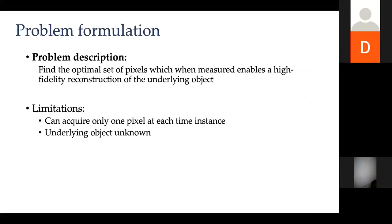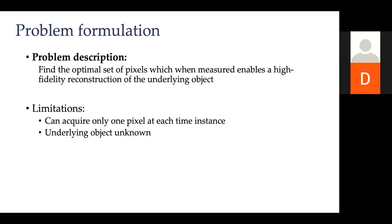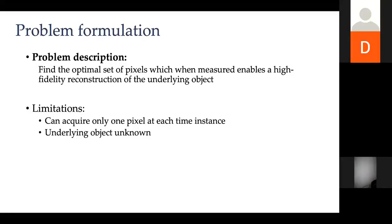The problem formulation is: find the optimal set of pixels which, when measured, enables a high fidelity reconstruction of the underlying object. That means find the smallest number of pixels that tell you what you're looking at without measuring everything. The key constraint is you can only acquire one pixel at a time, and you don't know what's there beforehand — it's not a compression problem. This falls in the compressive sensing area.